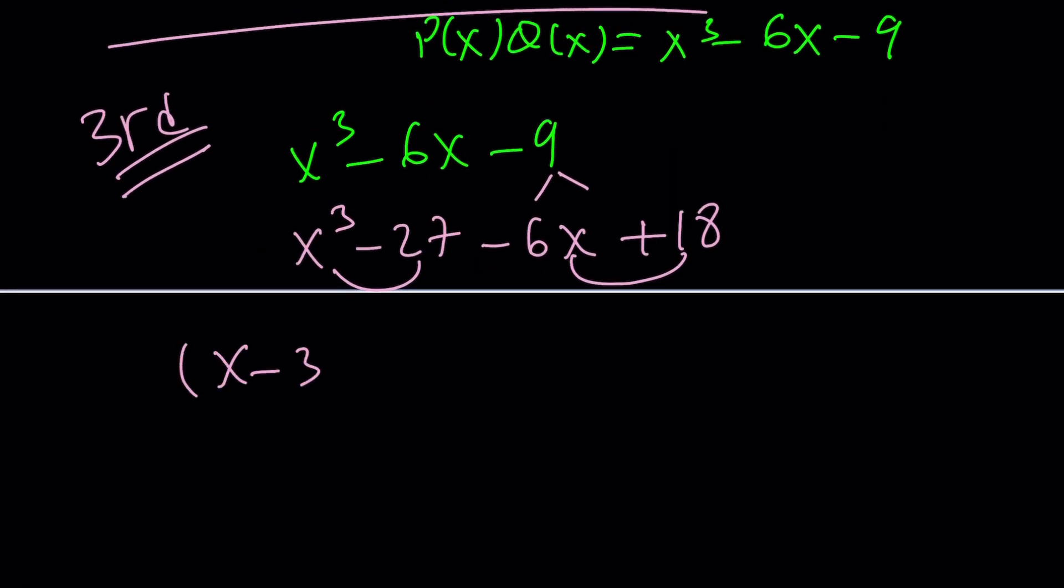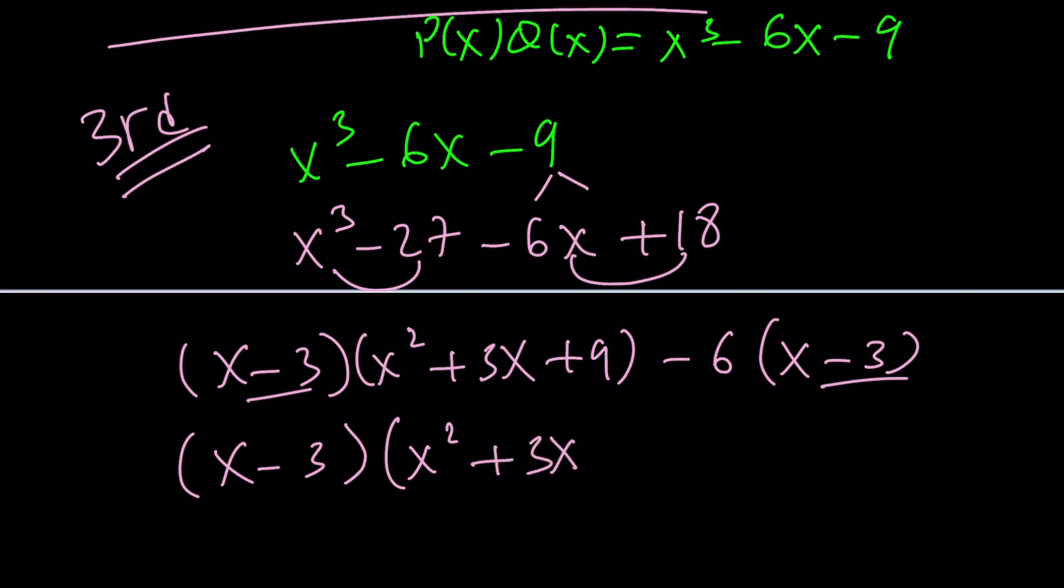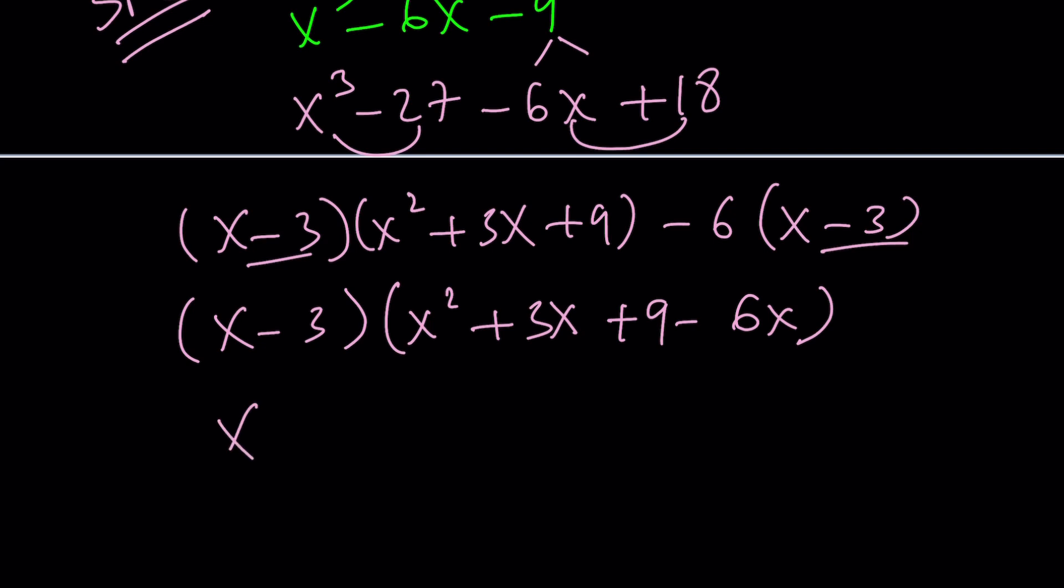So I can kind of break this down like that and then I can factor it. Look, this is difference of two cubes, a lot of formulas, right? All over the place. And this is just factoring the negative 6 out. Now we have a common factor, which verifies the fact that x equals 3 is a solution because by factor theorem, that means x - 3 is a factor.